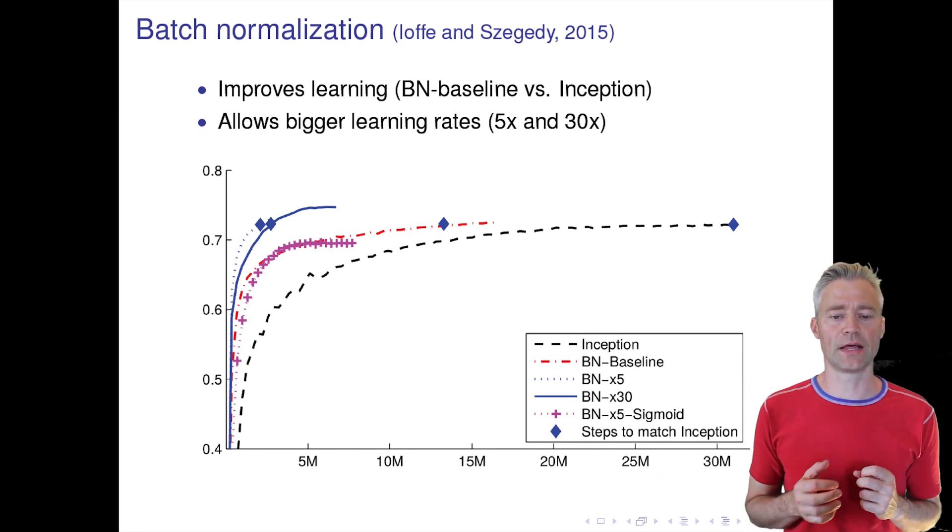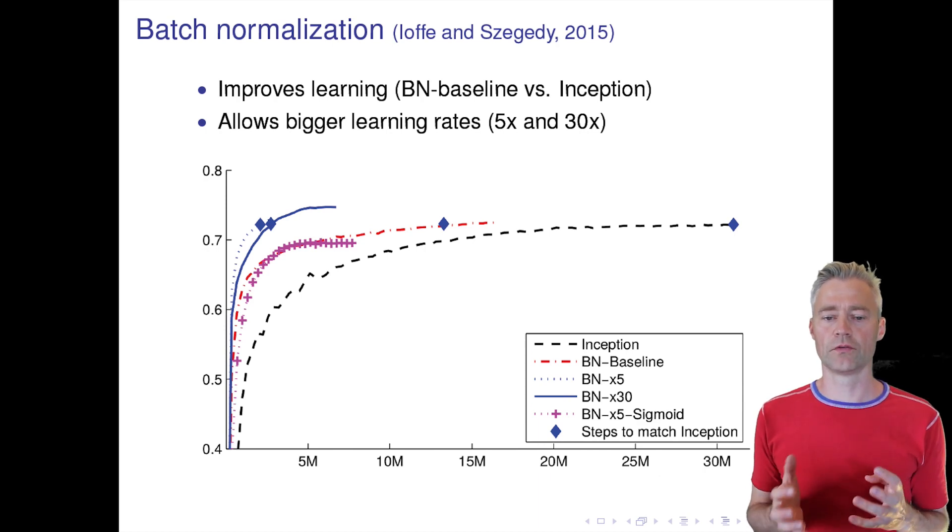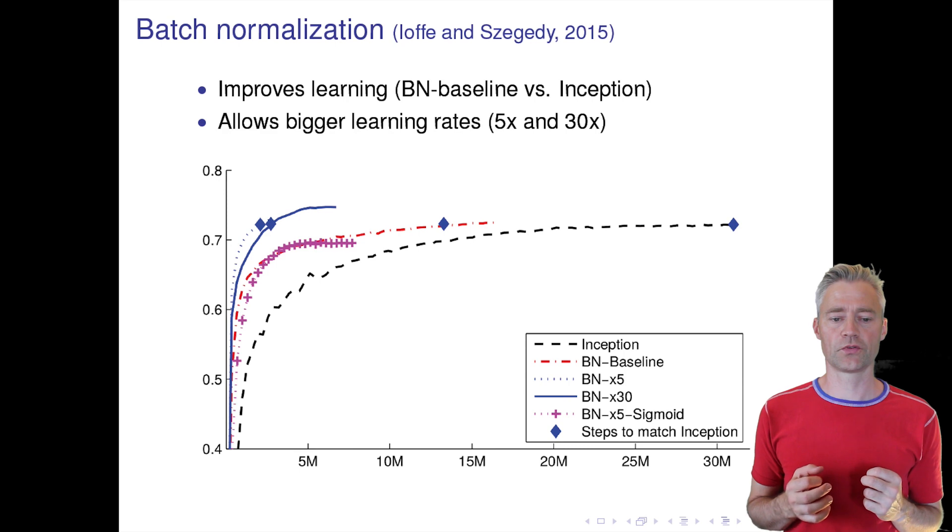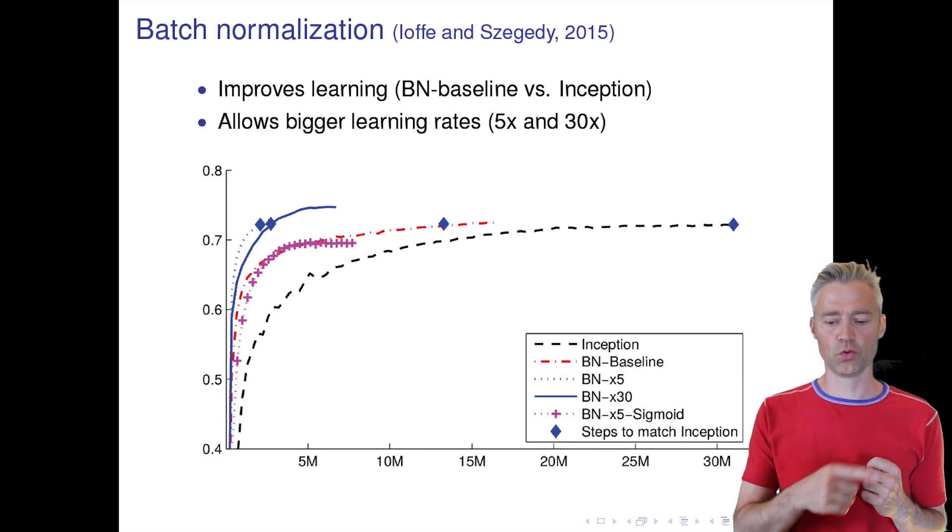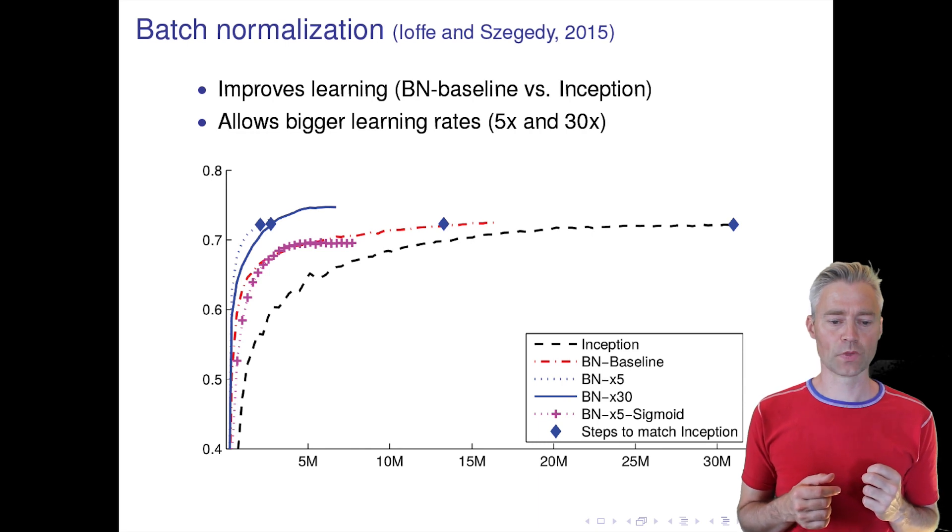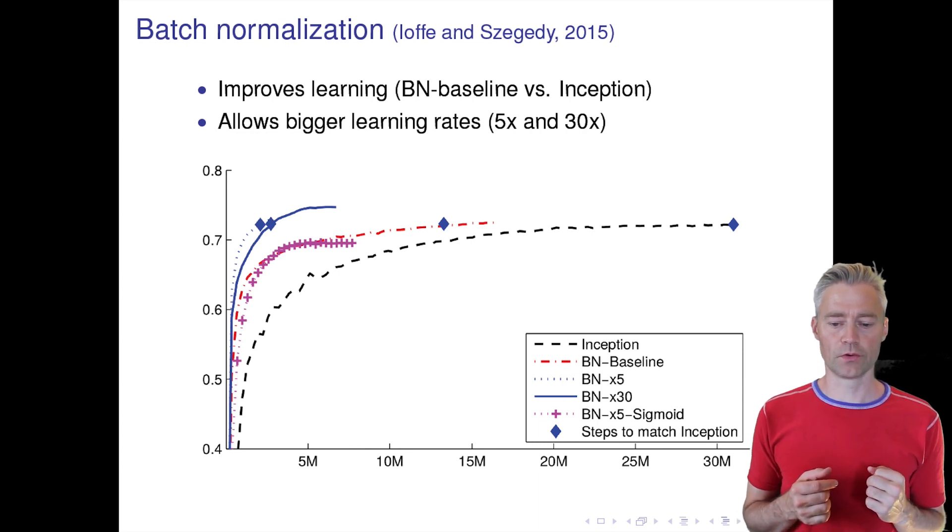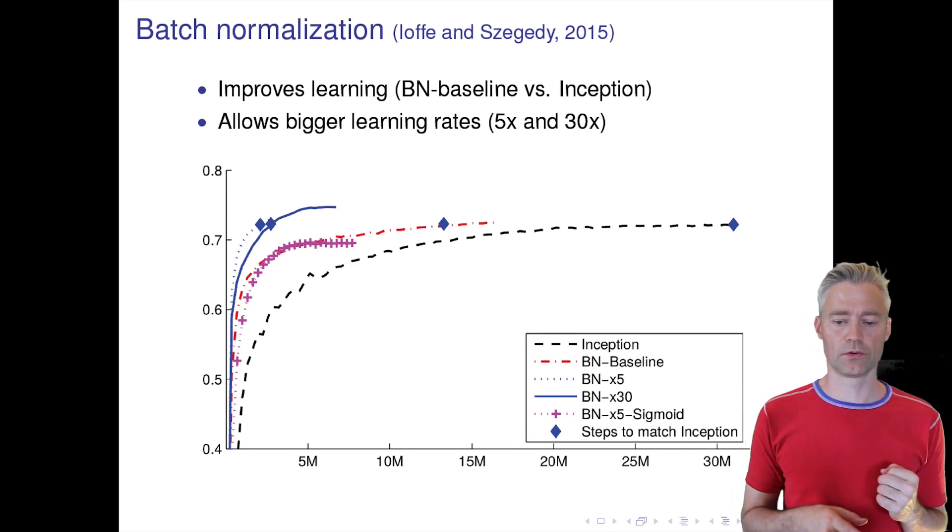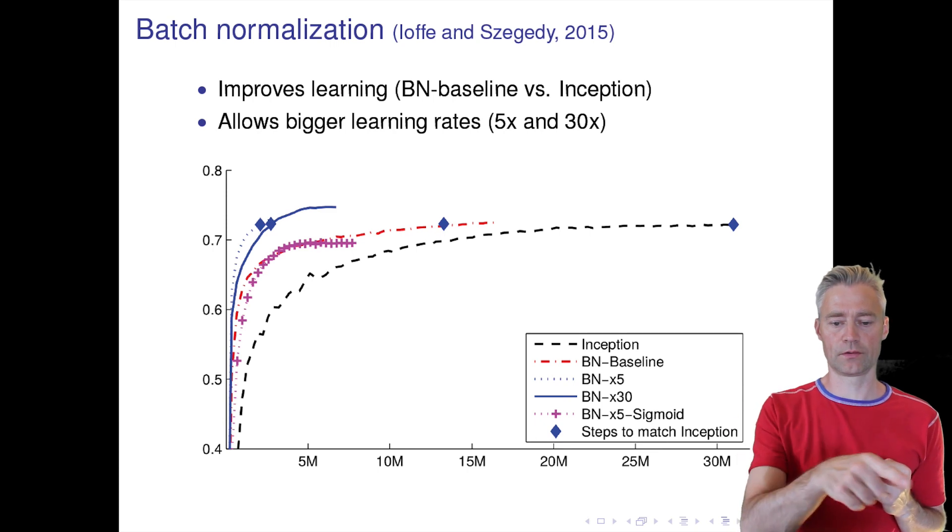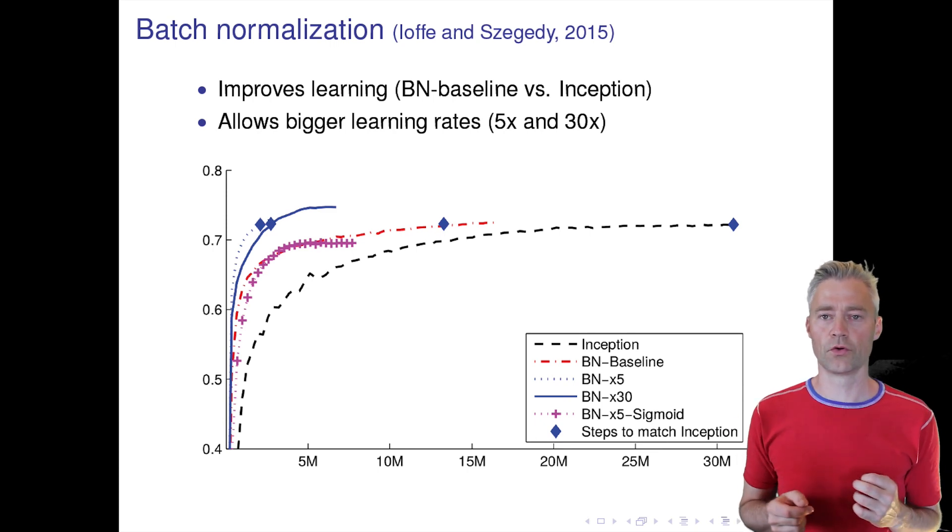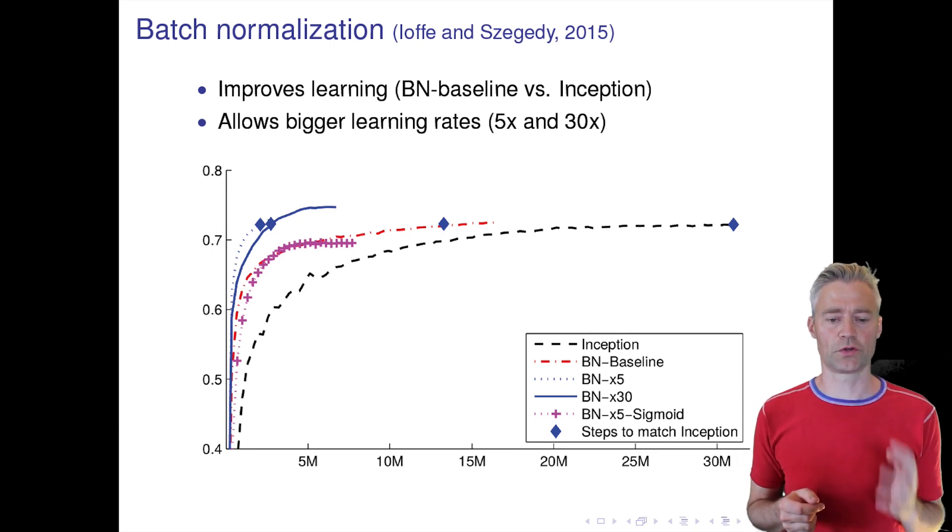You can also see from this graph that it actually gives much faster convergence, and this is on the famous GoogleNet for ImageNet image recognition. You can see that the blue line is the batch normalization used, and in standard learning this line that ends at 30 million updates—you can see it goes much faster. Of course these are very big networks so this is a considerable save in computation time.